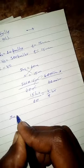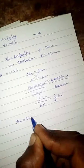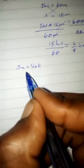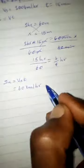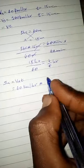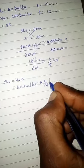S of x equals V of x times t. V of x is 60 km per hour times 1/4 hour.